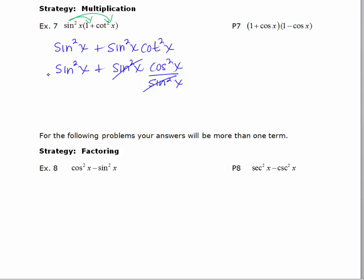We can cancel the sines. And we get sine squared plus cosine squared. And that's just going to equal 1, right? Sine squared plus cosine squared is equal to 1.